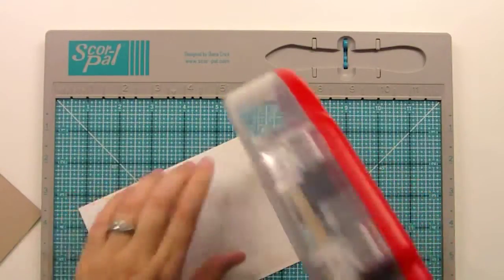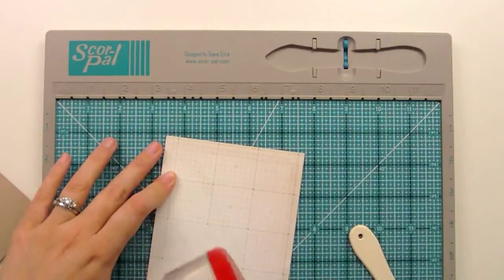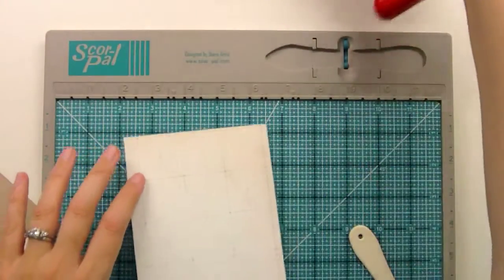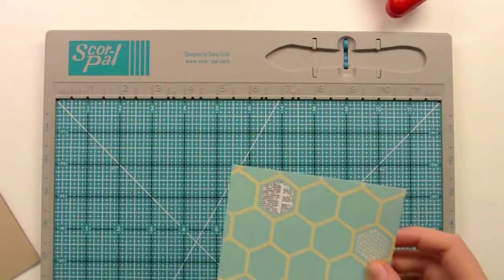Hi! Welcome to another Lawn Fawn video. Right now I'm just applying adhesive to some patterned paper because I'm going to cover the entire front of a card with this patterned paper from Studio Calico.